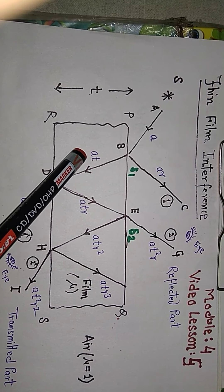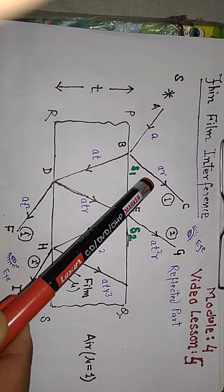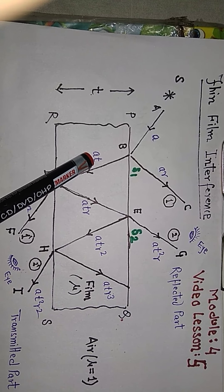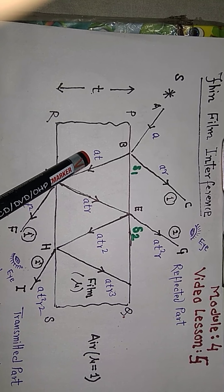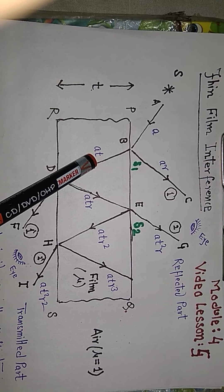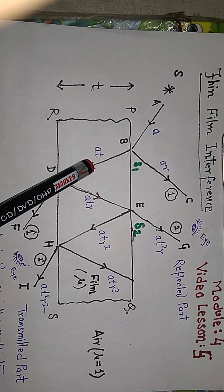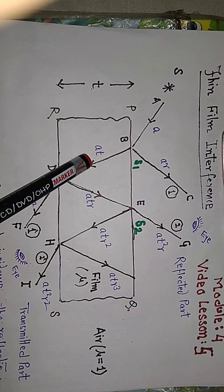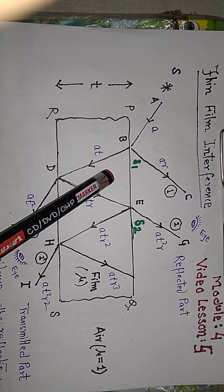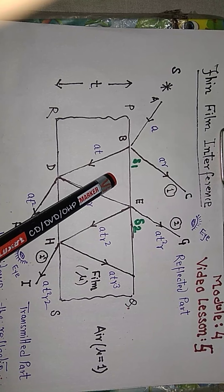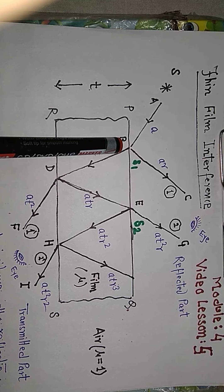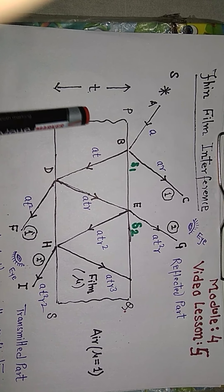If you square and add both components — that is, A²T² + A²R² — taking A² common, you get A²(R² + T²). Since R² + T² = 1, the total becomes A², where A² is the intensity of the incident light. So the energy conservation principle is always valid in interference at every point.